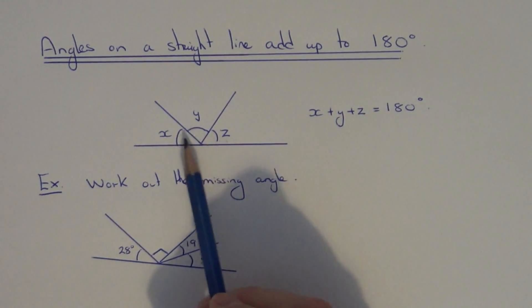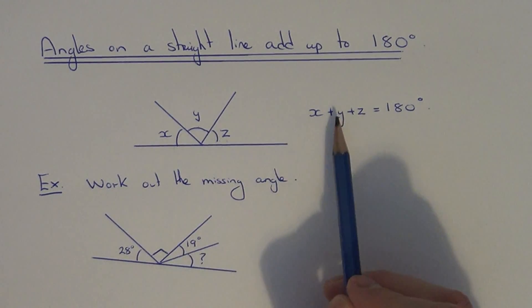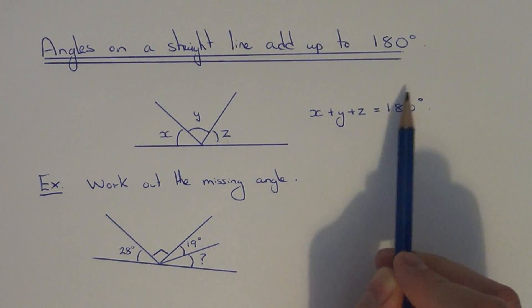You can see in the diagram we've got three angles here: X, Y, and Z. If we add these three up, it will give us 180 degrees.